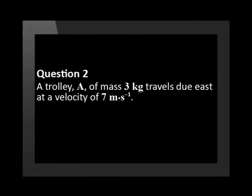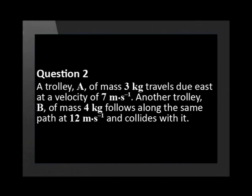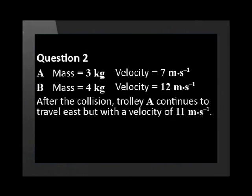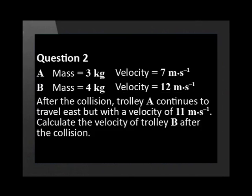A trolley A of mass 3 kg travels due east at a velocity of 7 m per second. Another trolley B of mass 4 kg follows along the same path at 12 m per second and collides with it. After the collision, trolley A continues to travel east but with a velocity of 11 m per second. Calculate the velocity of trolley B after the collision.